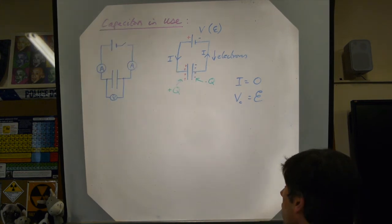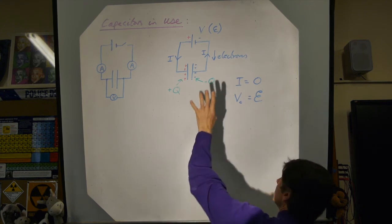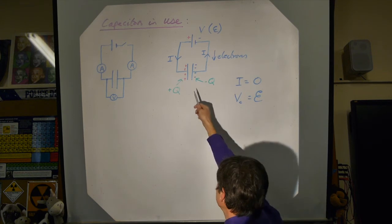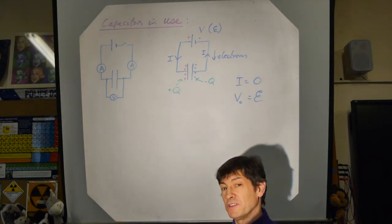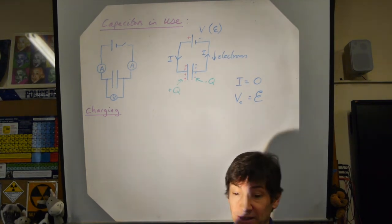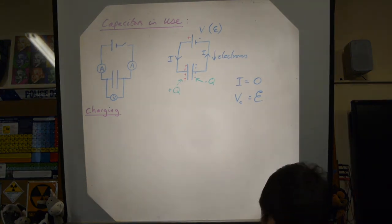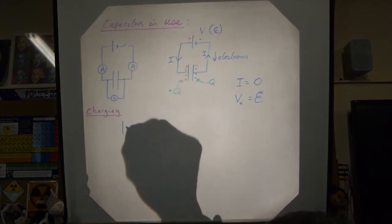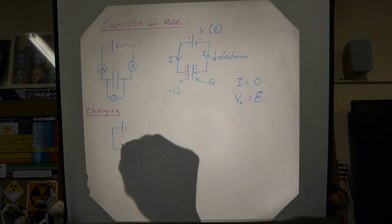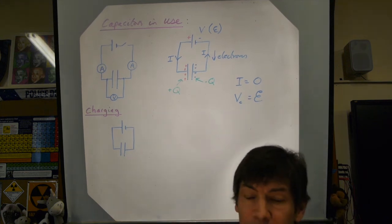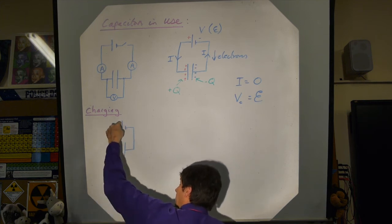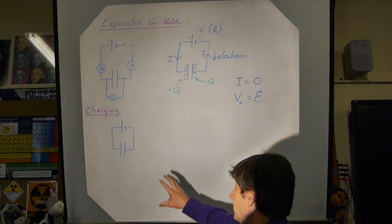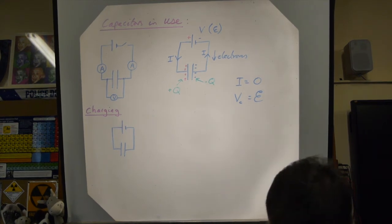Now let's get a formula for capacitance by looking at how a capacitor charges up. In our simple circuit with the capacitor attached to a cell, once the charges have settled and the current is zero, the voltage across the capacitor V equals the EMF of the battery. We have charge separated: positive charge on one plate and the same amount of negative charge on the other.